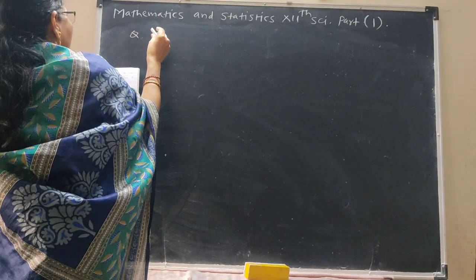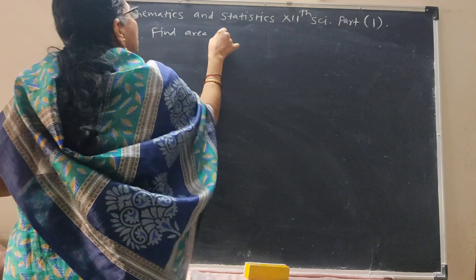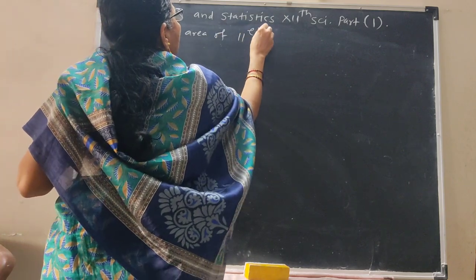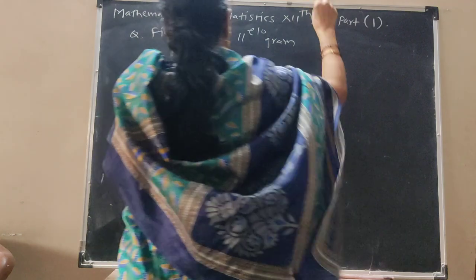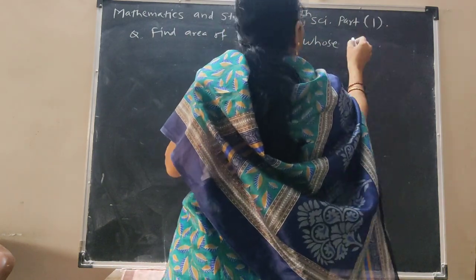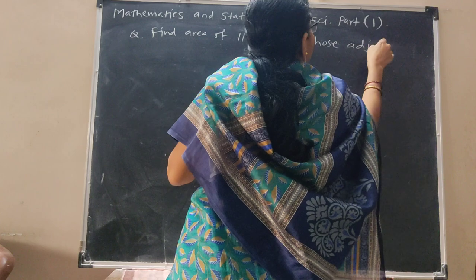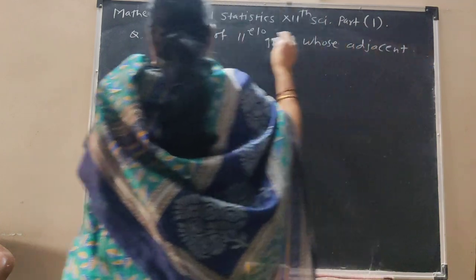Question: find area of parallelogram whose adjacent sides are given.